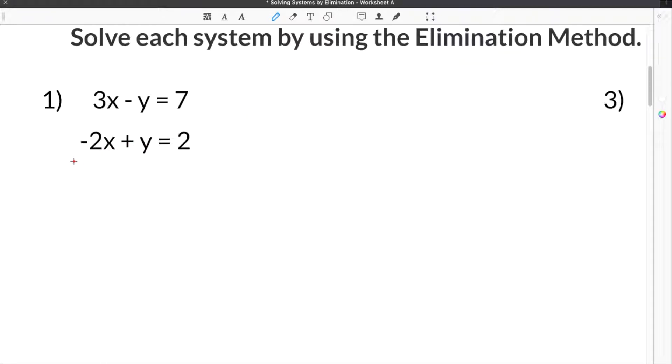When you do the elimination method to solve systems of equations, you're going to add each part of your equation vertically so that one or more of the terms will cancel. In the case of solving systems by using the elimination method, you have to visualize how you can add these vertically to see what terms or variables will cancel.